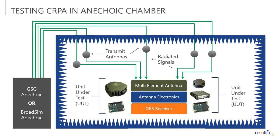The simplest way to test the SERPA antenna or the whole system is to place it in an anechoic chamber. The GSG anechoic or BroadSim anechoic system provides RF signals into transmitters inside the chamber, and those signals are radiated to the multi-element antenna, the antenna electronics, and the GPS receiver. This is a simple use case to understand because you're basically just taking the whole system as it would be installed and placing it in the chamber. The fact that you're using real spatially separated signals presented to the antenna preserves the nature of those simulations so that the SERPA receives the signals it should see.